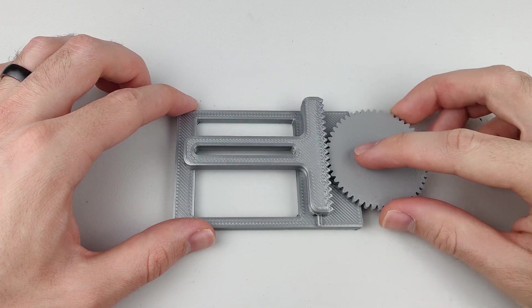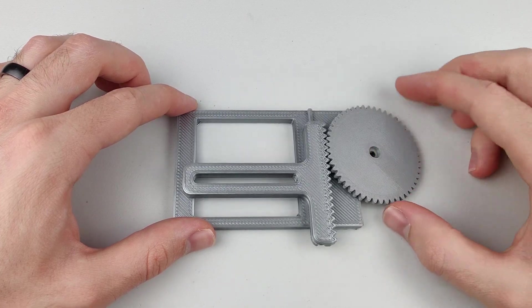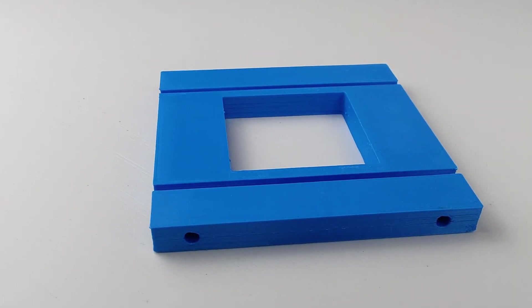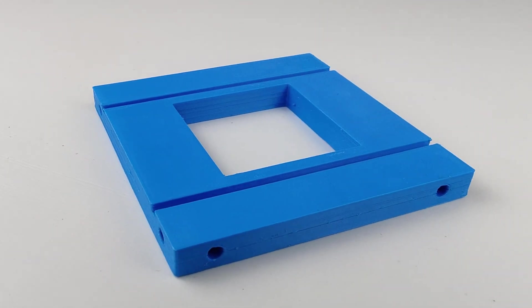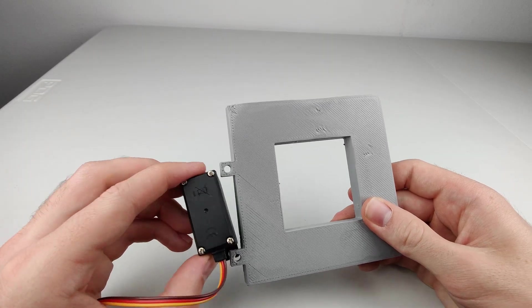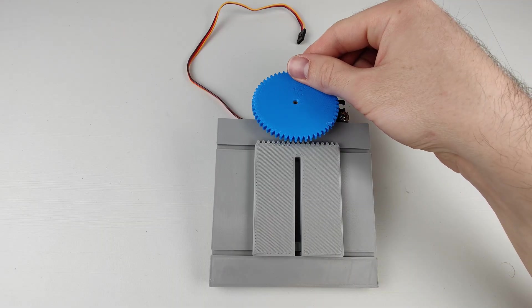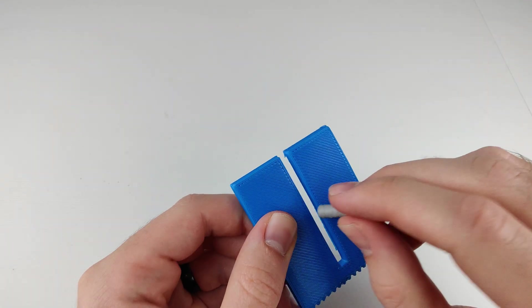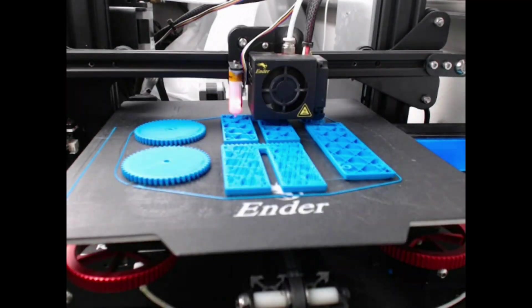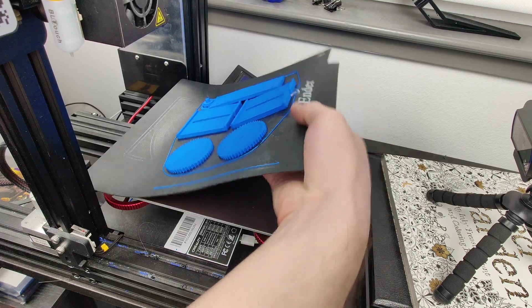My first design moved how I wanted, but it didn't have a way to mount the servo or the second axis. Later designs included heat set insert holes for mounting the second axis, but the servo mount pegs were too close together, or the gears didn't line up correctly, or the slot was too thin to fit a sensor to. After I reprinted the parts with my improvements, it was time to assemble it all.